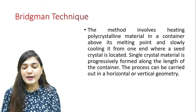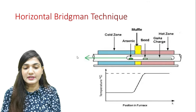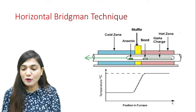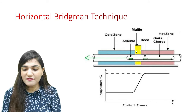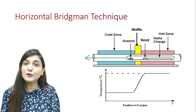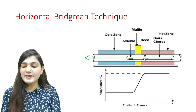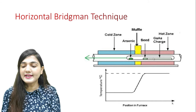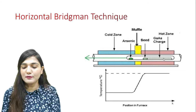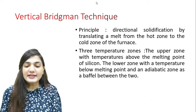The process can be carried out in horizontal or vertical geometry. As you can see, we have a hot zone, a middle zone, and a cold zone. We have a seed and melted gallium arsenide. We move the hot zone toward the cold zone, and around the seed interface, the melt begins to solidify.